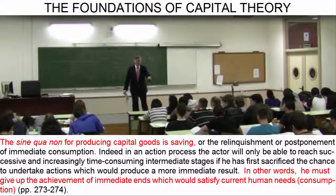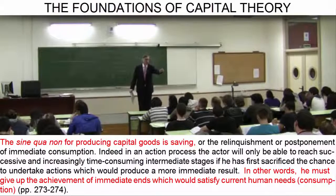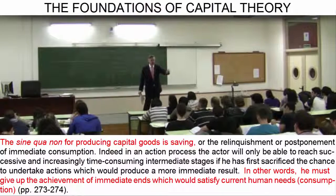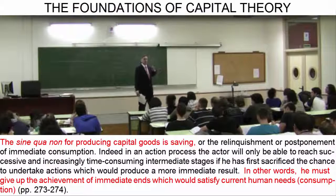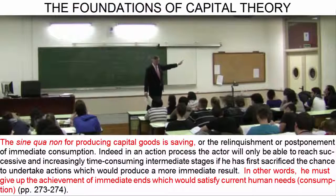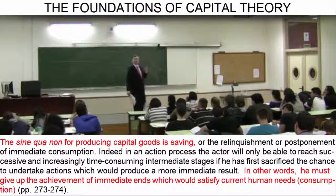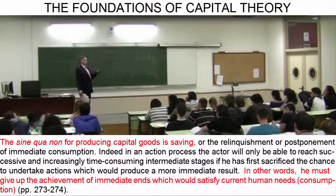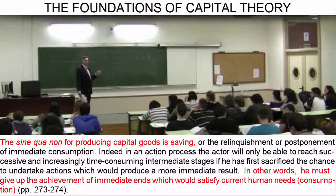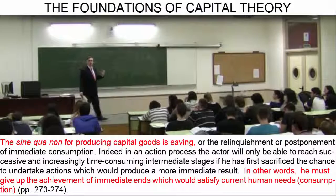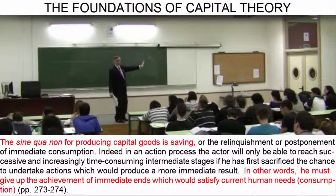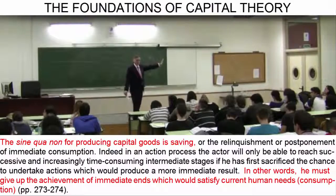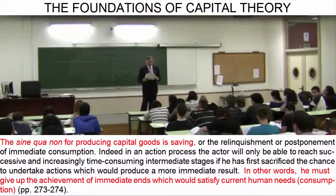When you decided to not start working right away to earn some money, but instead to postpone for four years going to work so you could finish your degree, you were saving. Saving means giving up immediate consumption. And by the term consumer good, we understand a first-order good, which is a good that directly satisfies human needs — in other words, the end one seeks to achieve. When I postpone the achievement of an end into a more distant future, I am saving.